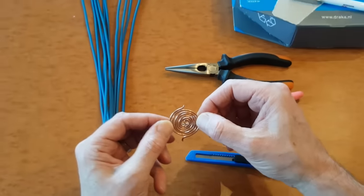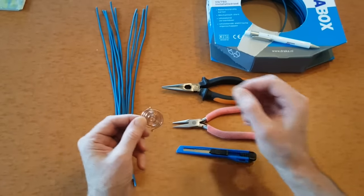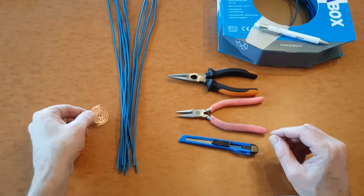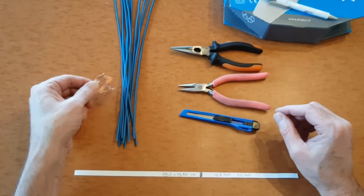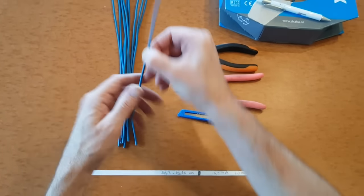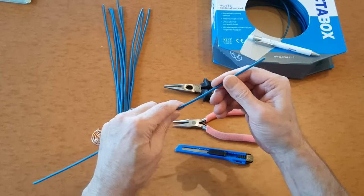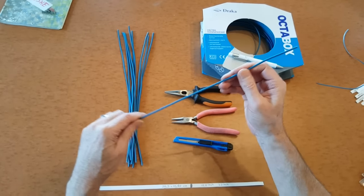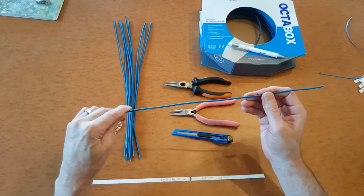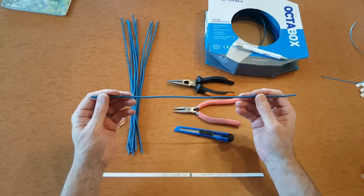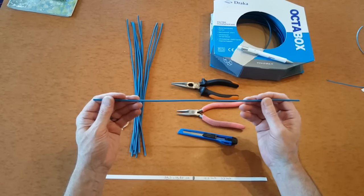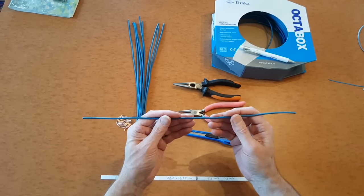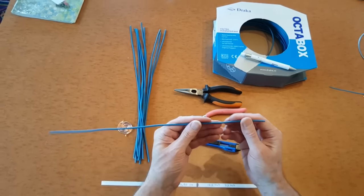It's fairly simple, and what I've done already is I've taken some measurements. What we do is we use 39.3 centimeters, which is a cubit length, or in inches it's 15.5 inches. This is for the American audience and the English audience who want to make it as well.